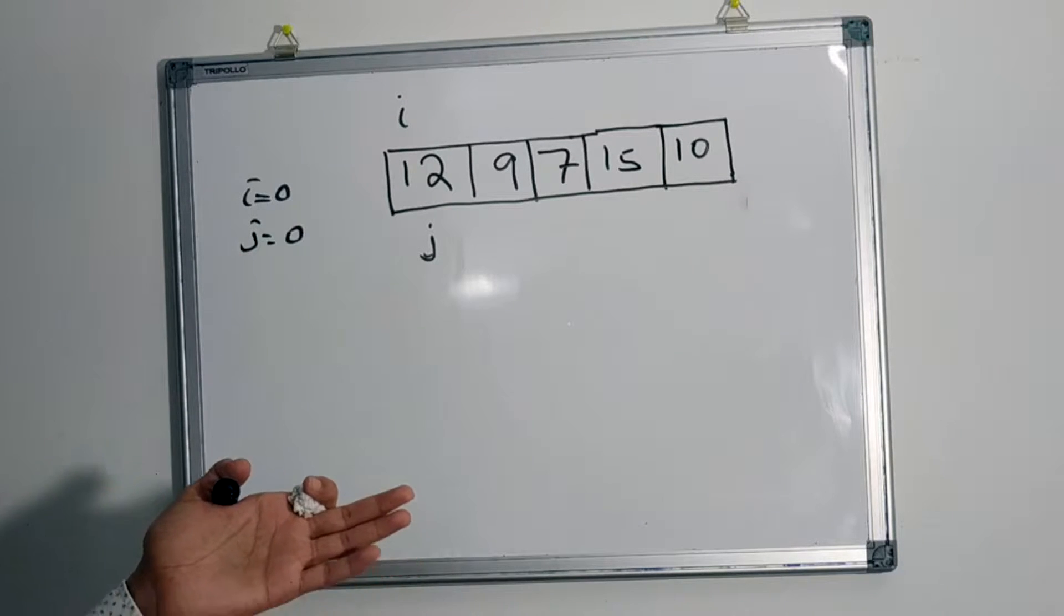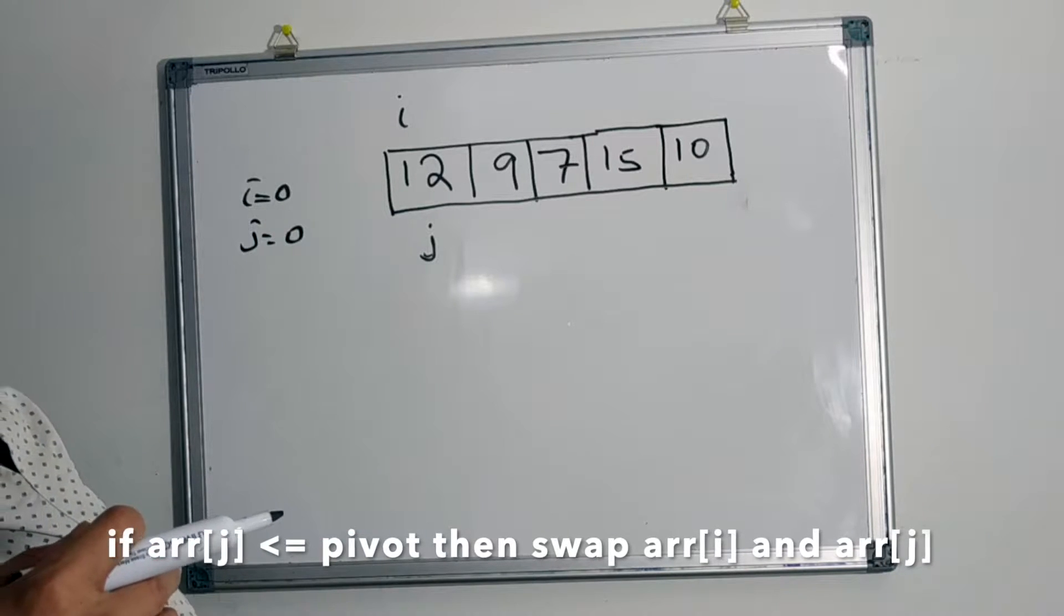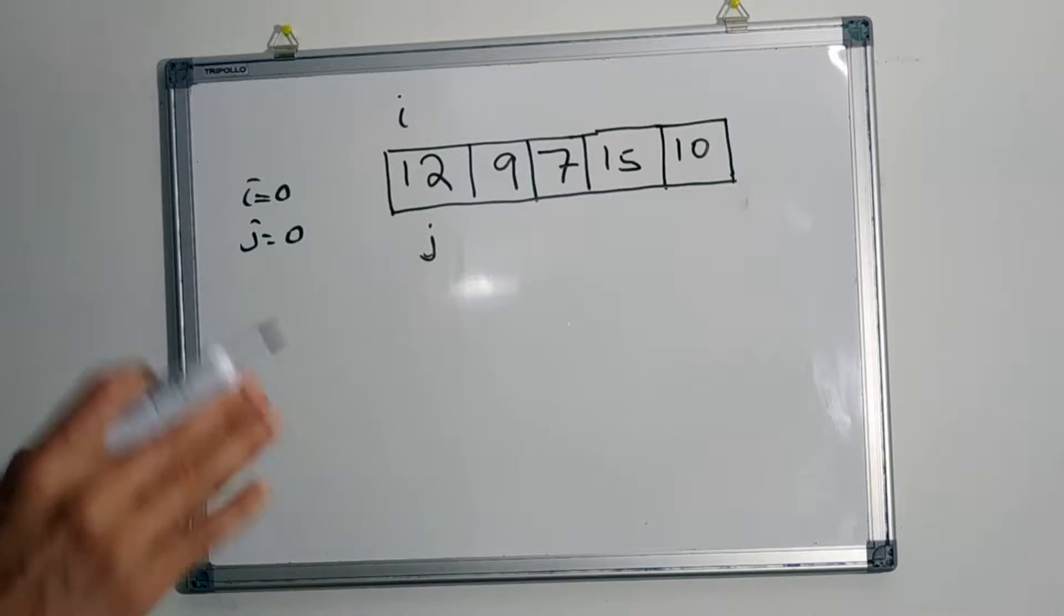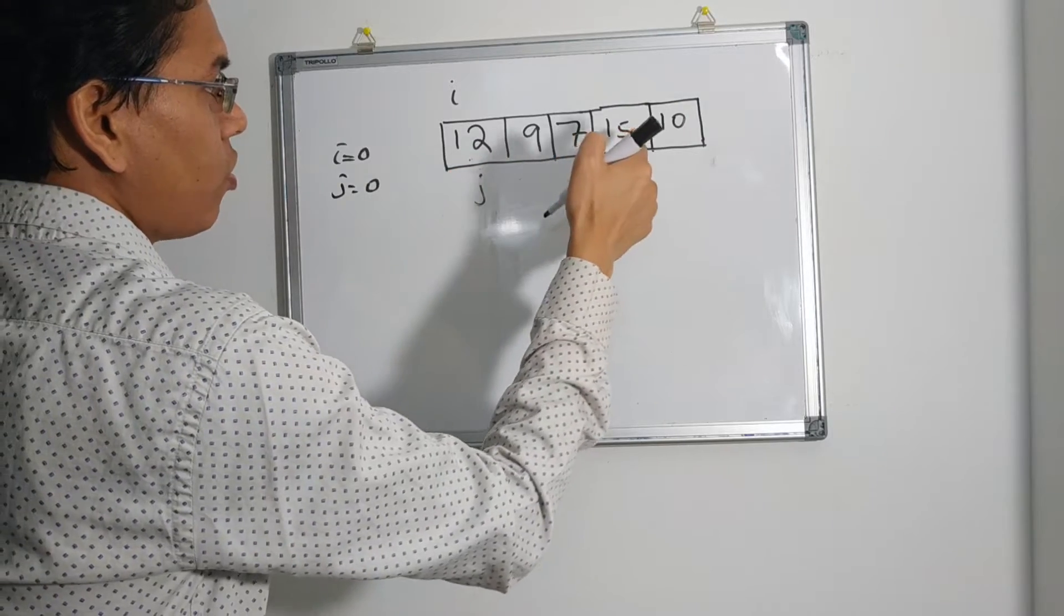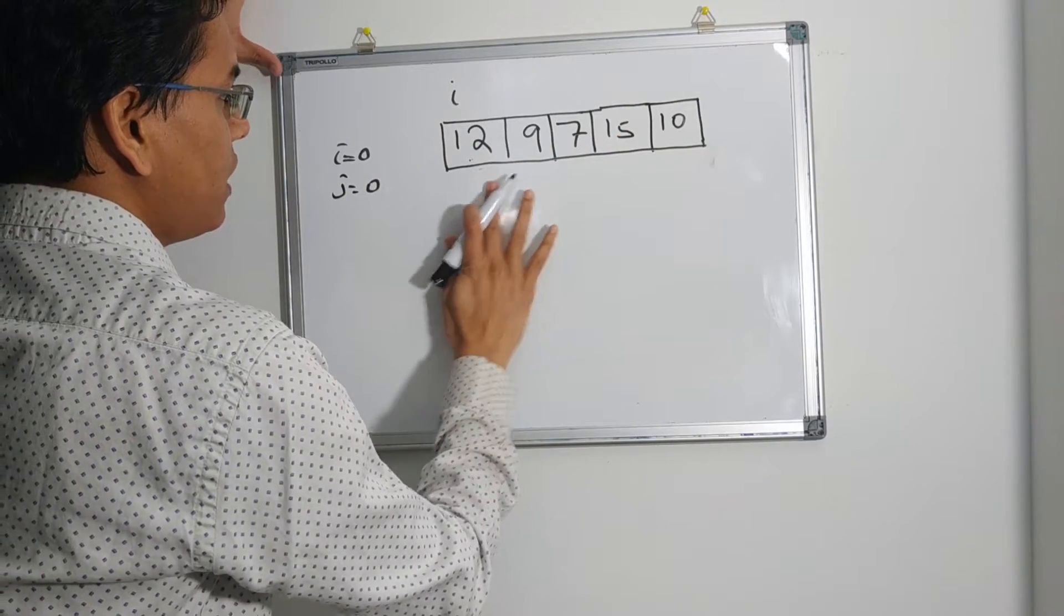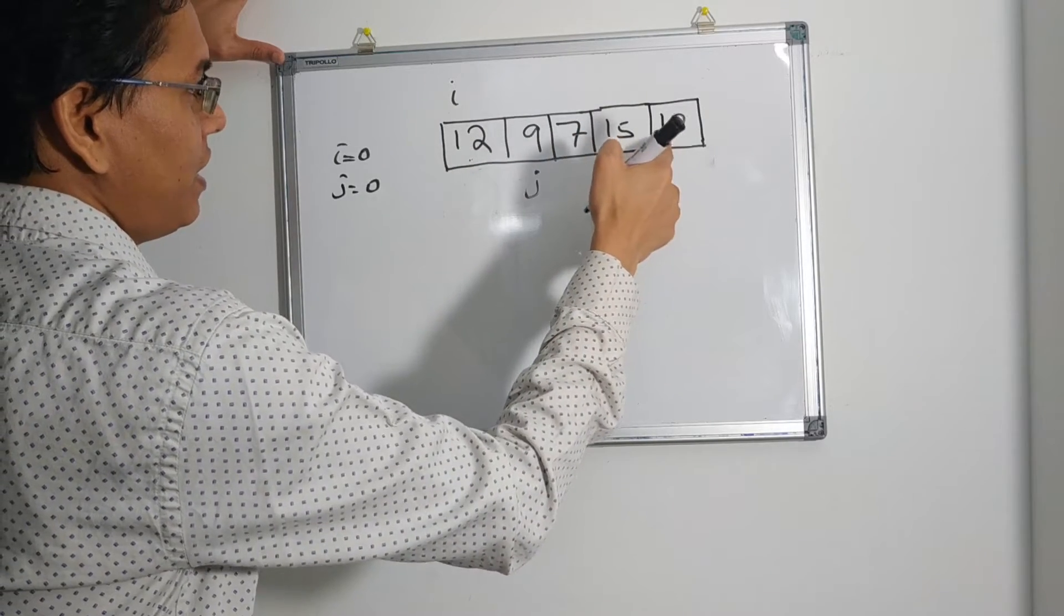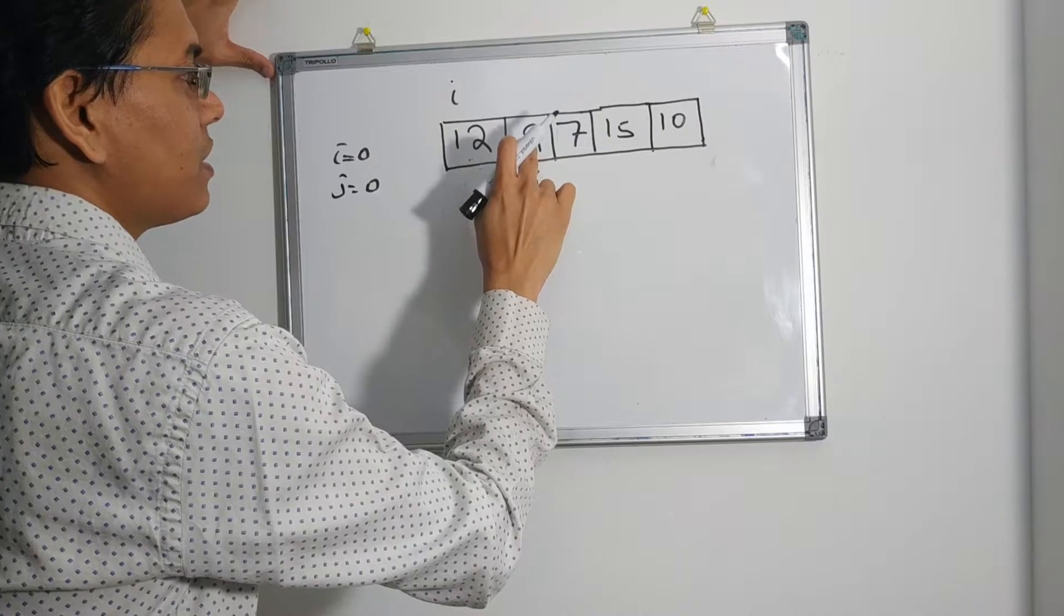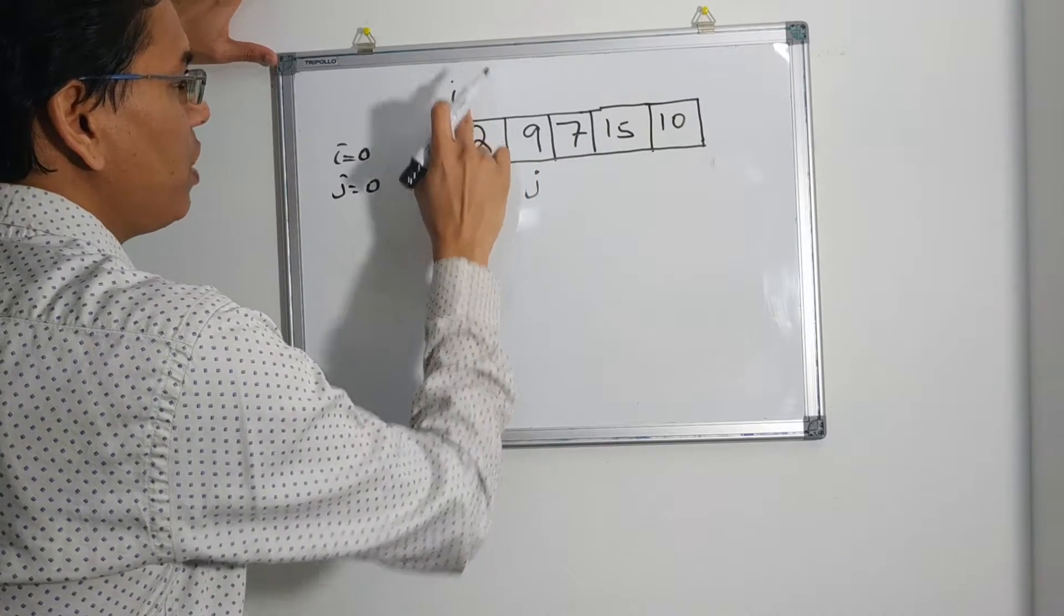What will we do here? We will scan through the elements in the array, and if the element is smaller than the pivot element, then we will swap with our marker. Let's scan it. 12 is not less than 10, we will move j to the next index. 9 is less than 10, so we found a candidate. Let's now swap this 9 with 12.